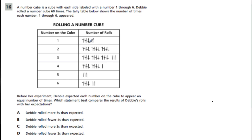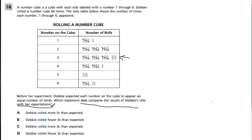Here is another frequency table. Debbie expected each number of the cube to appear an equal number of times. She rolled a six-sided die many times and thought every number would turn up the same amount because each number has equal probability. However, that's not what happened. We should notice that 3 happened the most and 5 happened the least. The question asks which statement best compares Debbie's results with her expectations.